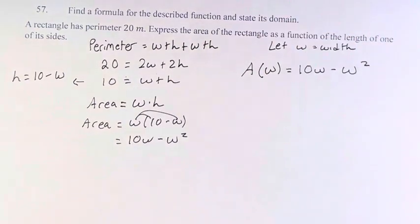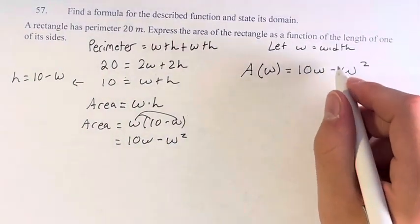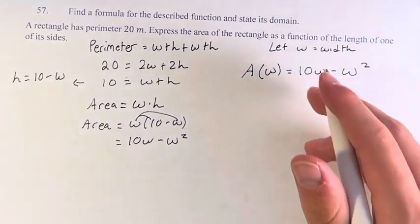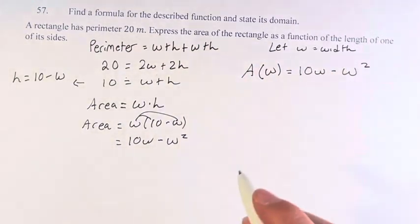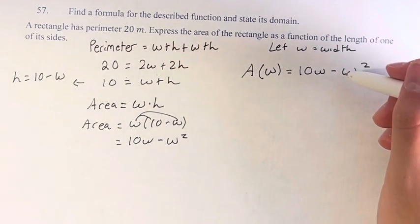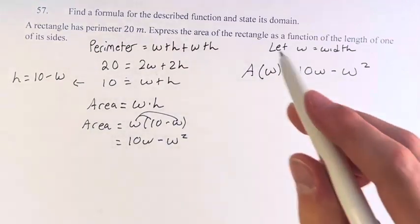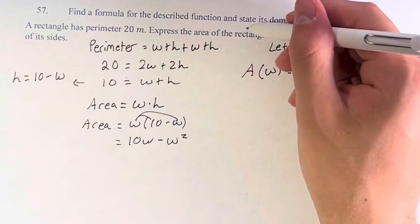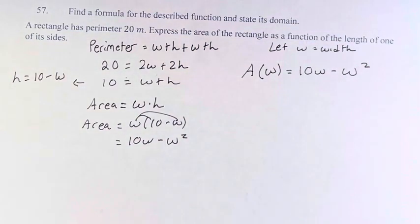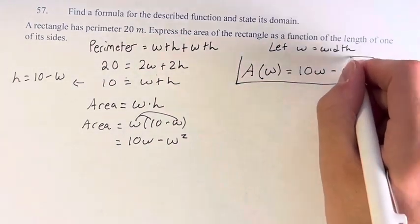What is the domain of this function? Well, we don't have the square root of anything or a denominator of anything, things that can't be negative or can't be zero. So any value you put in here, you're going to have a valid function output. However, we have to consider the fact that this is describing a real-life phenomenon, the area of a rectangle. Therefore, the area itself has to be positive.